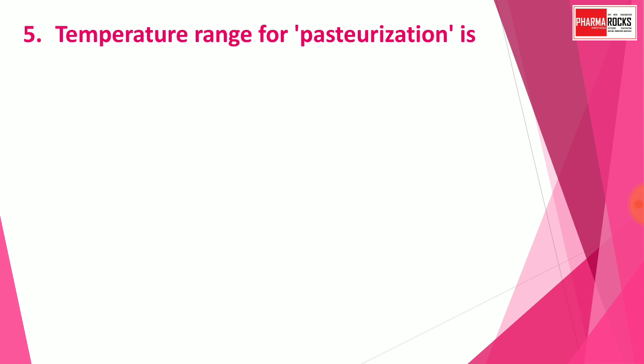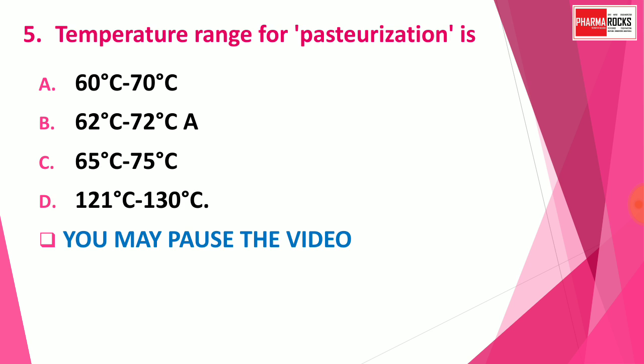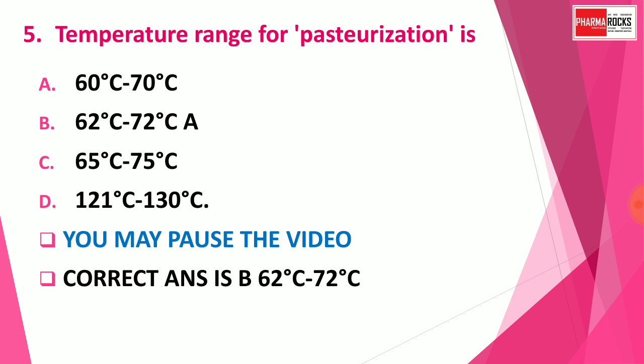Question number 5. Temperature range for pasteurization is — Option A: 60 to 70°C, Option B: 62 to 72°C, Option C: 65 to 75°C, and Option D: 121 to 130°C. You may pause the video to think about the correct answer. The correct answer is Option B, 62°C to 72°C. The pasteurization of milk is done at the temperature of 62 to 72 degrees Celsius.